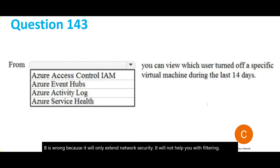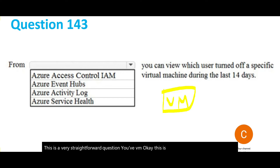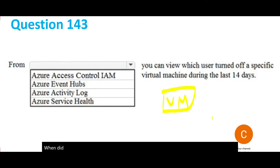Let's look at the next question. This is a straightforward question. You have a VM, and you need to know when that VM was switched off in the last 14 days. Common sense says you check the activity log or event log.